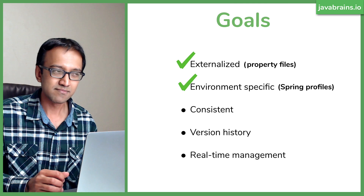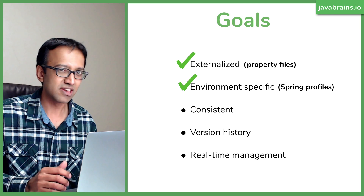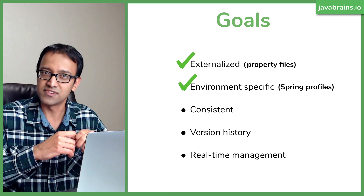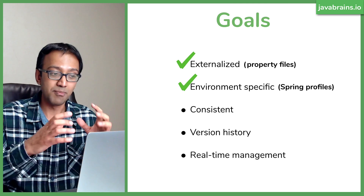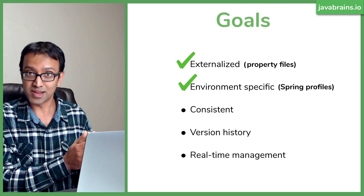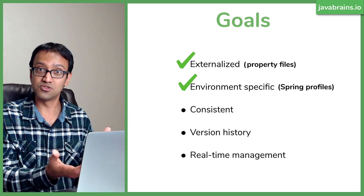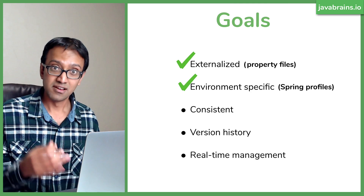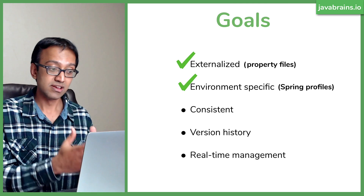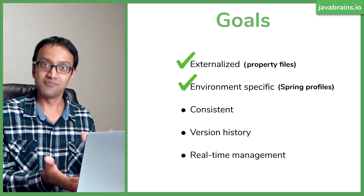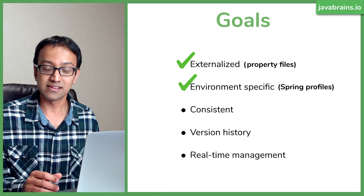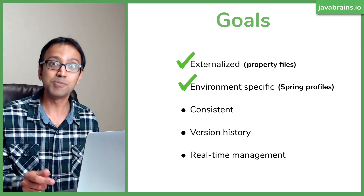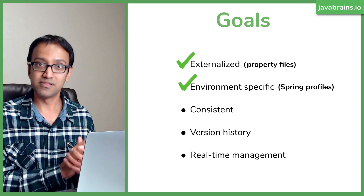What about consistency? Have we achieved that? No. Why not? Because let's say I have a jar with some configuration values and somebody makes a change — there's a new build, a new jar. Now that jar is deployed to two of three instances of microservices, but the other one still has the old one. The change goes to one but not the other — it's not consistent. As for version history, we kind of have it because the configuration is in property files, but without consistency, version history doesn't mean anything. You might see a config committed in source code but not know if it was actually deployed, so you don't have reliable version history.